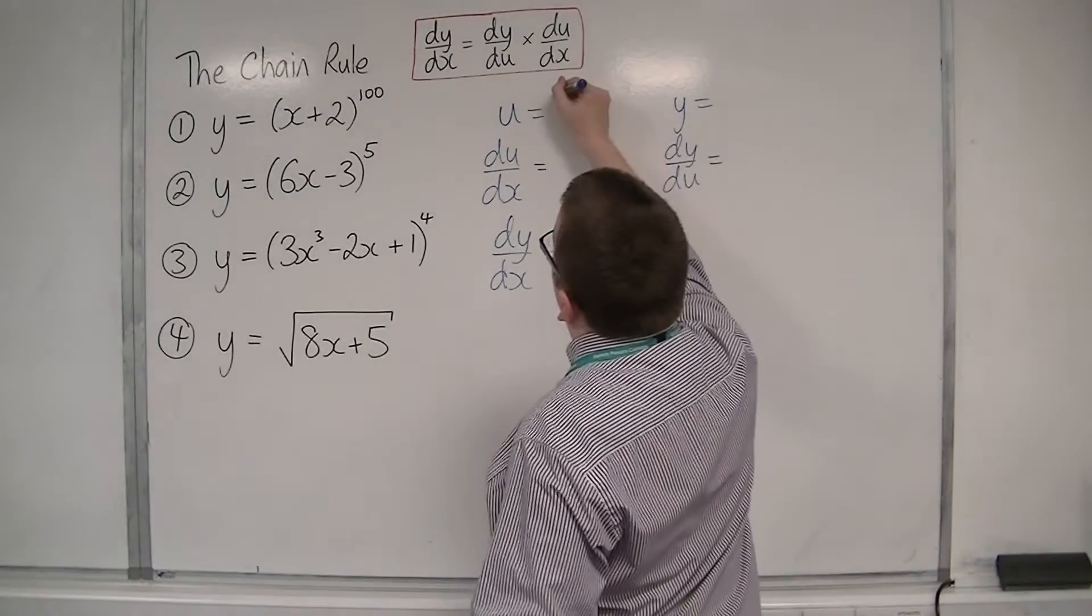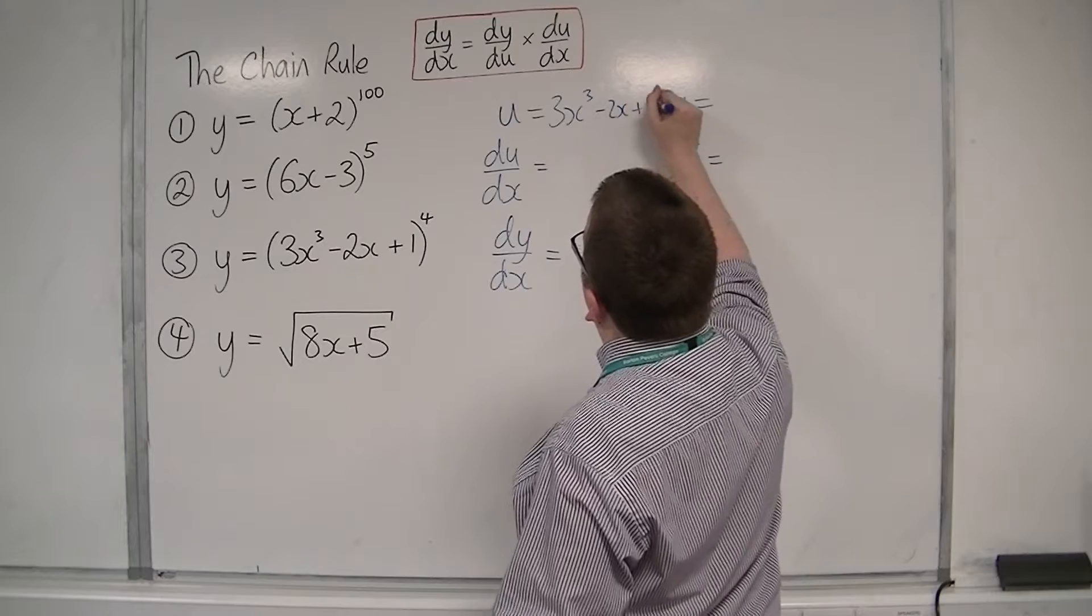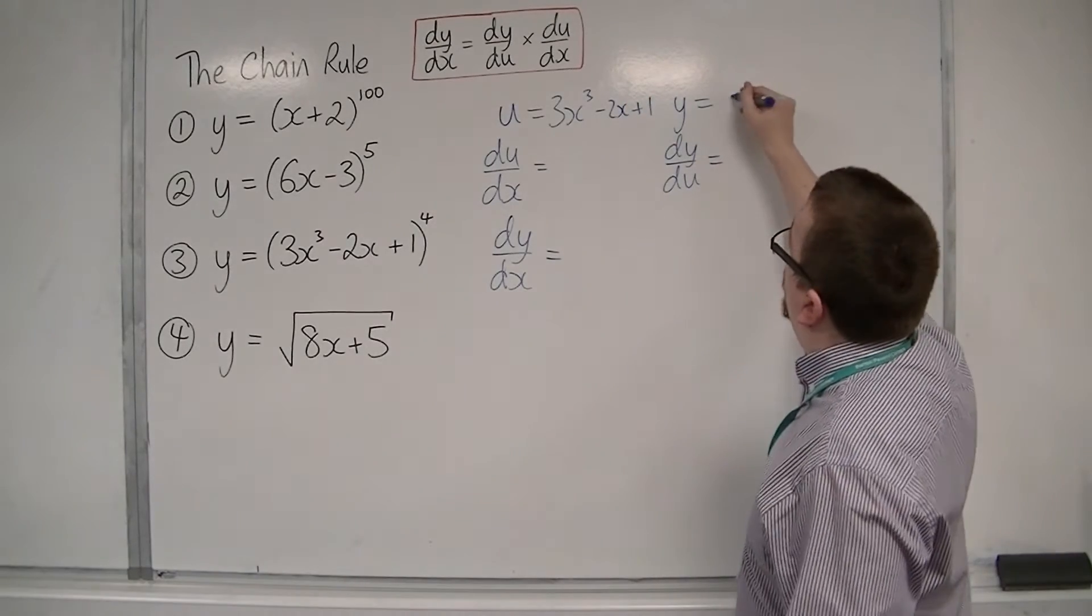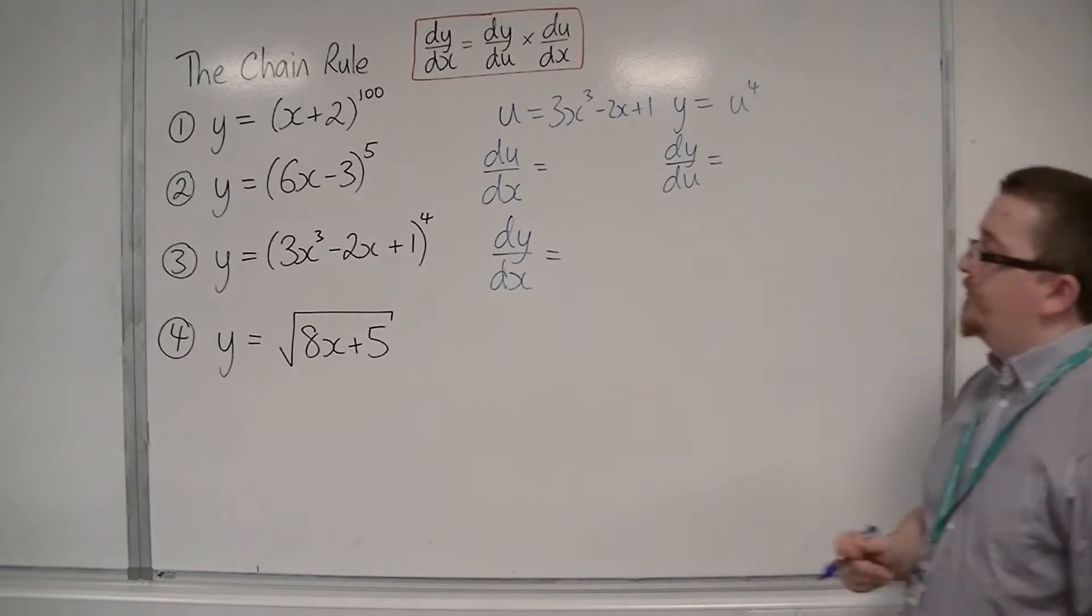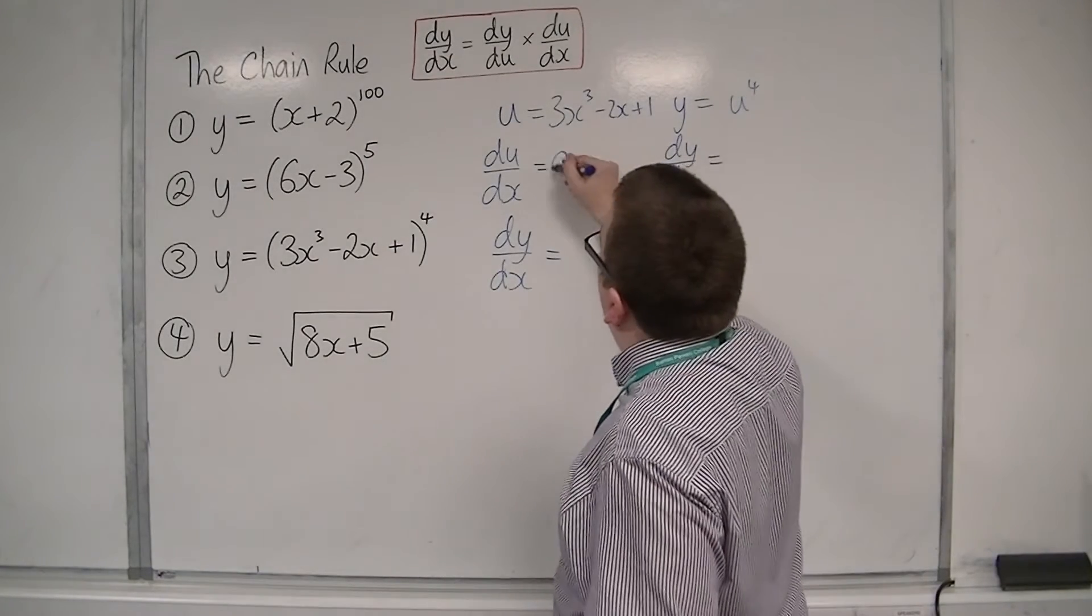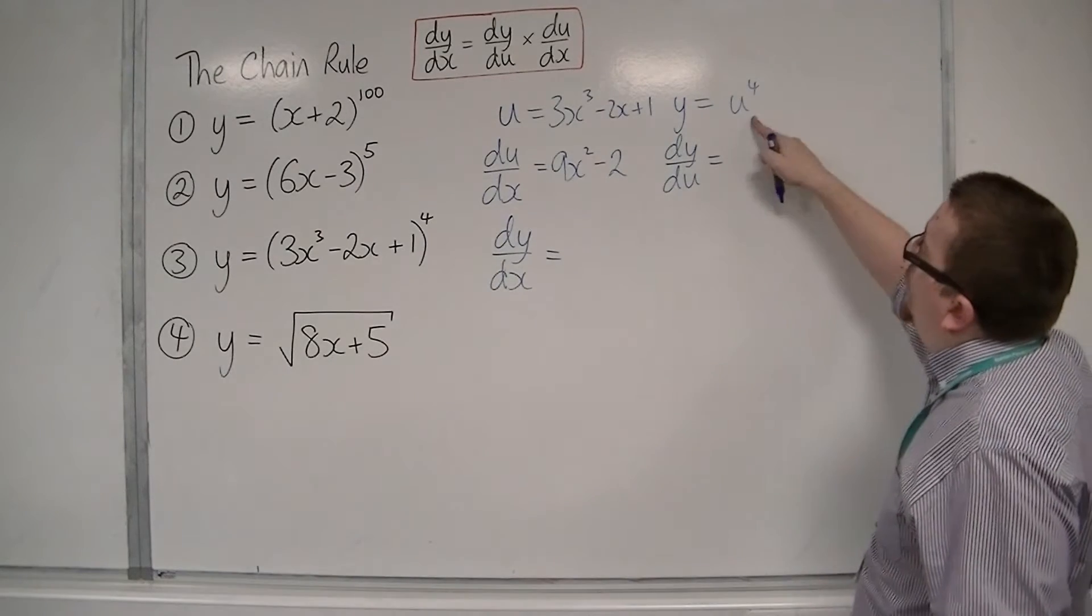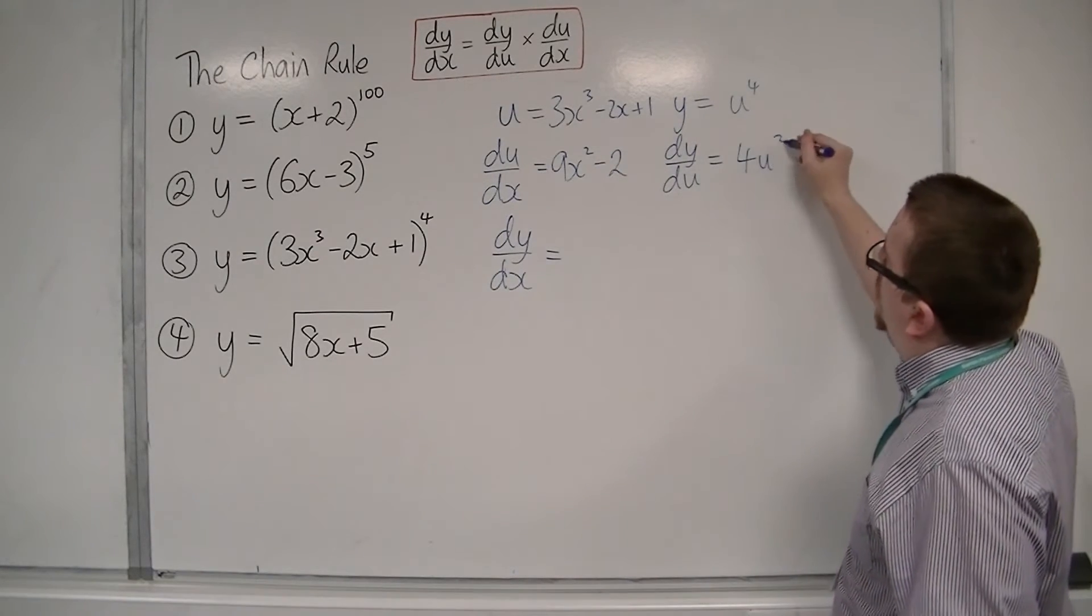The u will be 3x cubed minus 2x plus 1, and the y will be u to the power of 4. So du by dx will be 9x squared minus 2. dy by du for u to the power of 4 is 4u cubed.